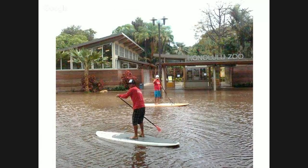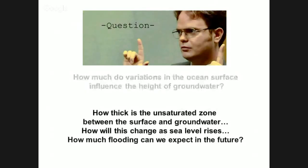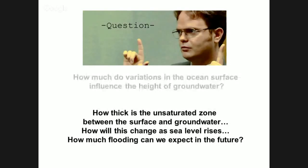Our study has two questions: first, how much does groundwater vary with the ocean as the ocean surface varies? And second, as sea level rises, how thin will the accommodation space get, how much flooding can we expect, and where? I'll answer the first question with methods and results, then the second.